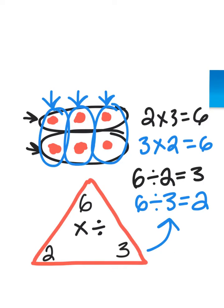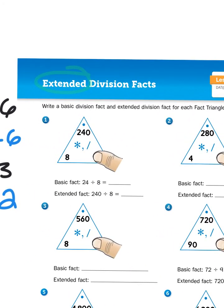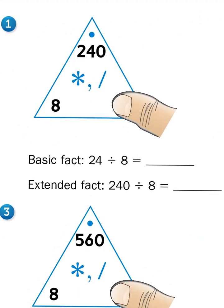So, now that we've got that all cleared up, let's move on to some extended division facts. Problem number one, as we can see, there is a fact family triangle. We see the number 8 at the bottom, and we see the number 240 at the top. So, if we were thinking about this in terms of a multiplication problem, this problem would be 8 times something gives me 240.